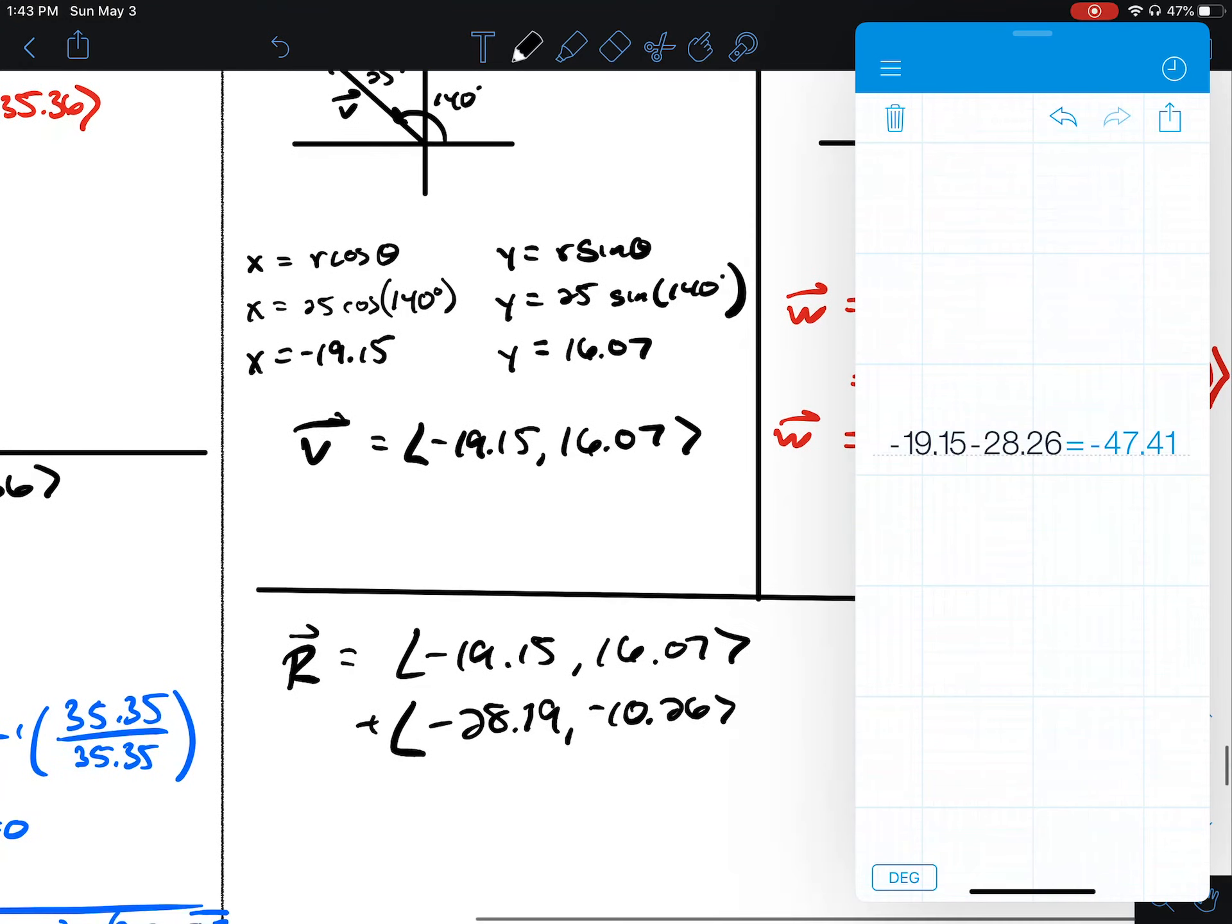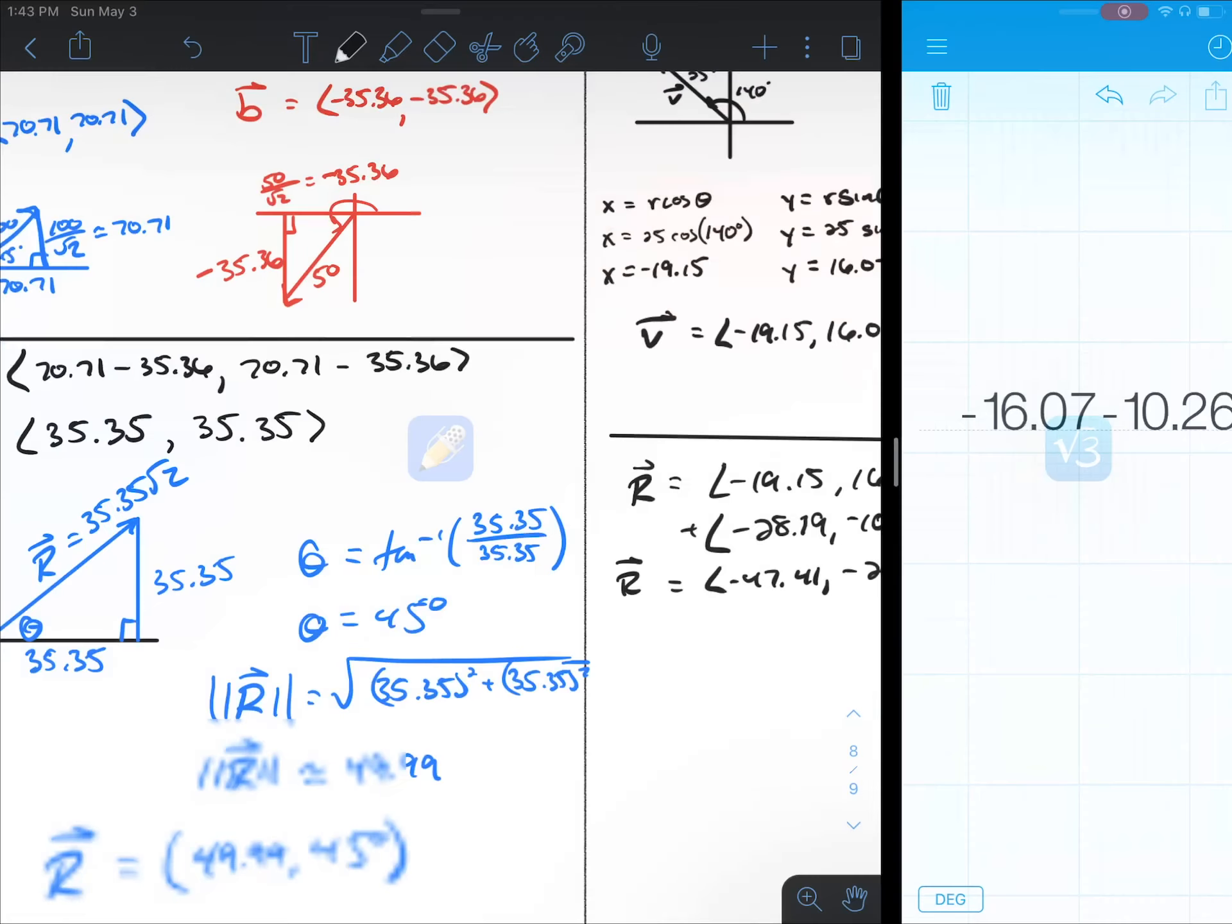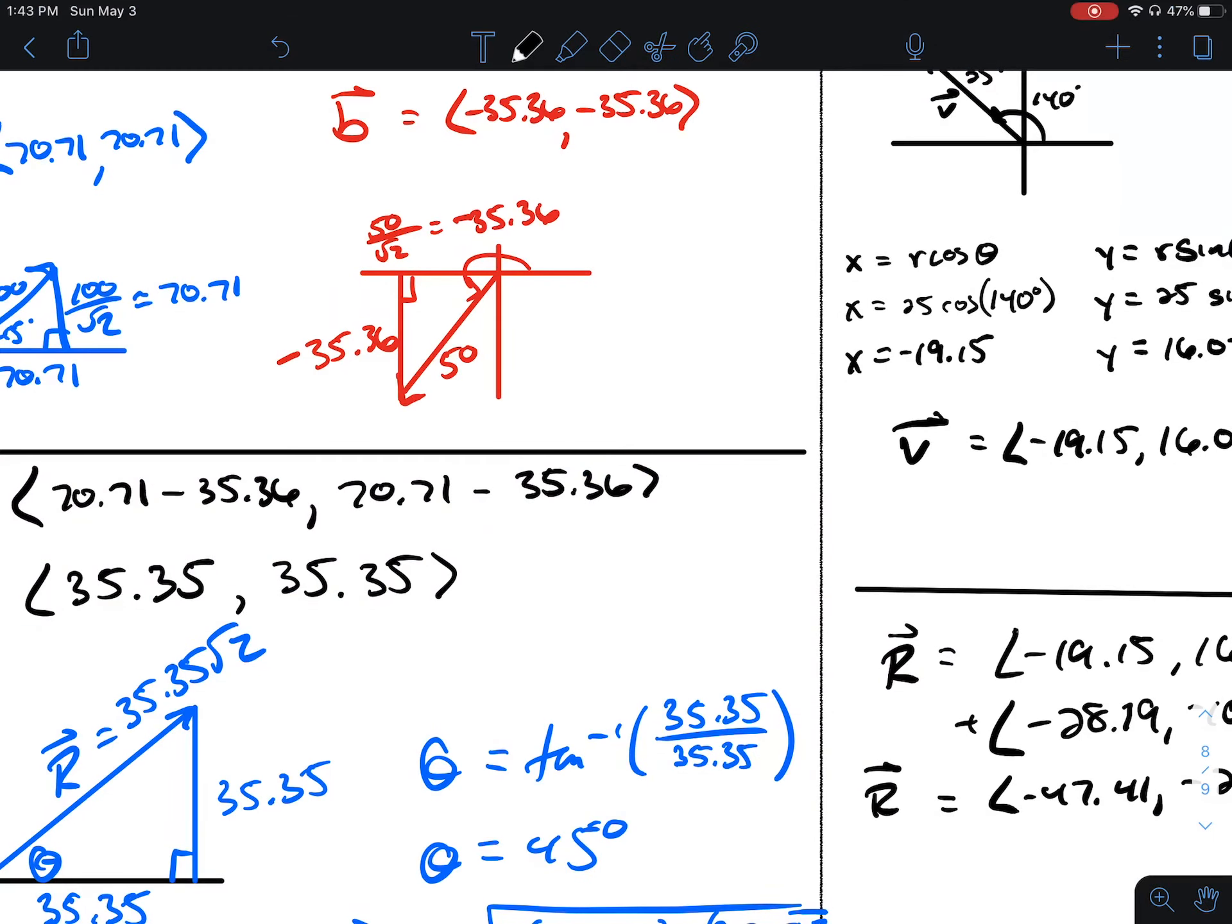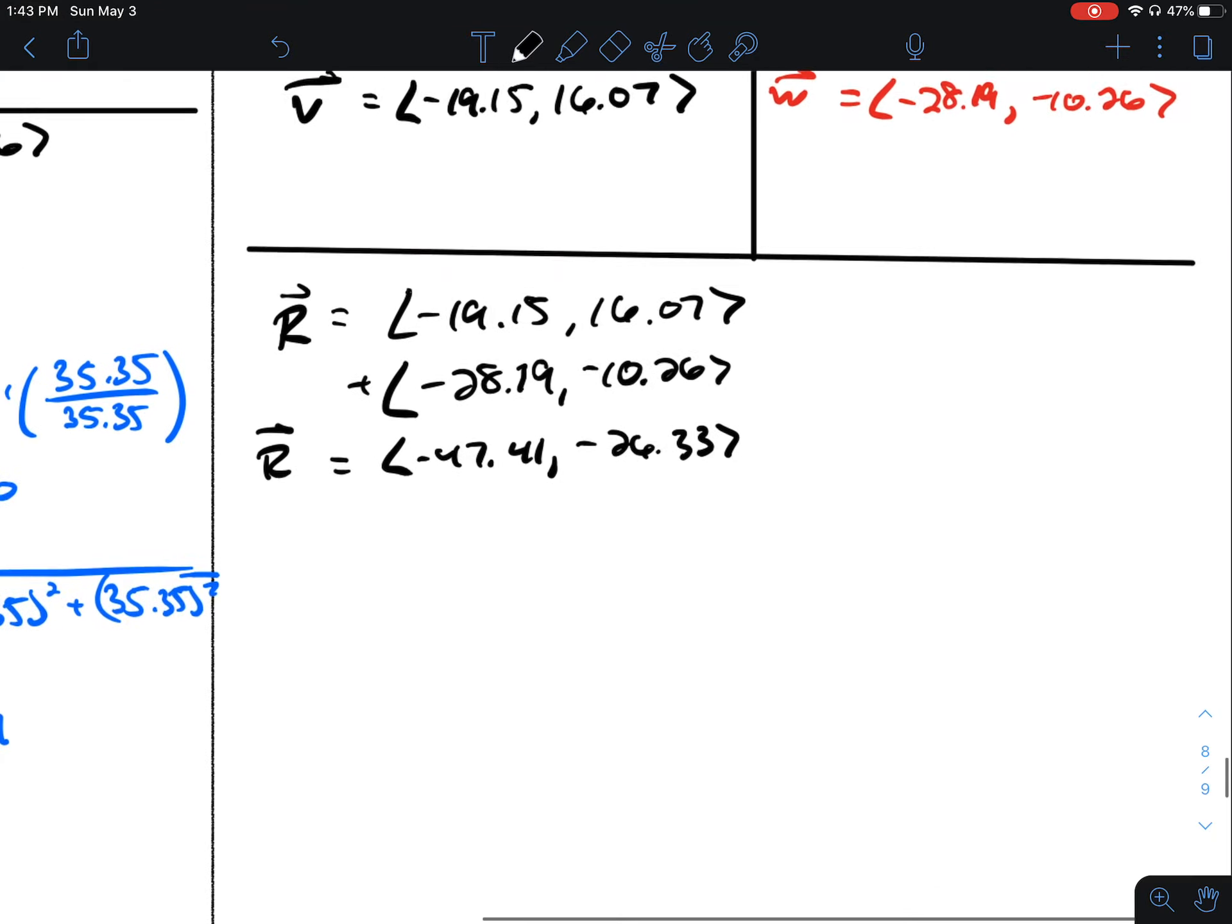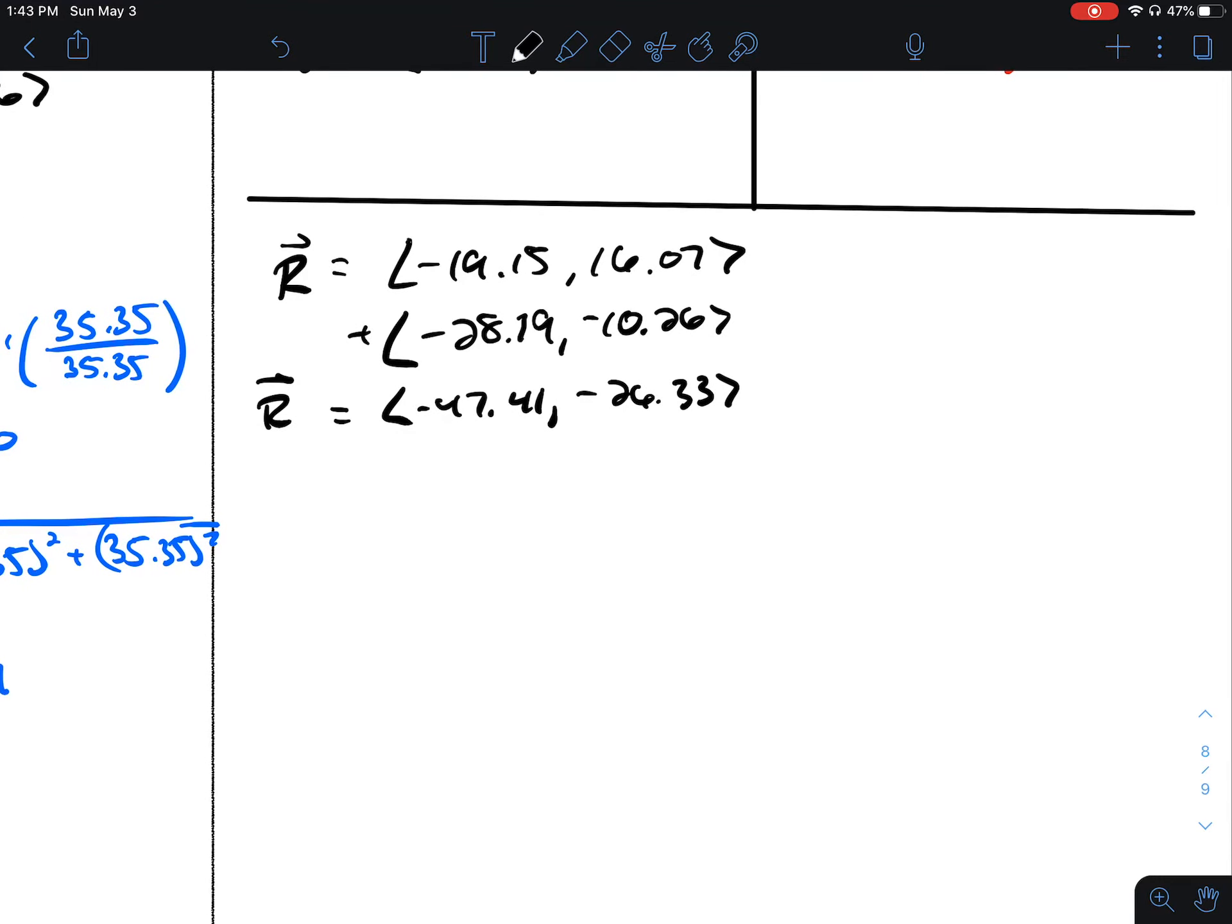That's negative 47.41. If I take negative 16.07 minus 10.26, we get negative 26.33. Now this is in component form. We would like our answer to be in polar form.